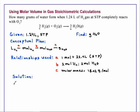Starting with our 1.24 liters of hydrogen gas, we know that 1 mole of hydrogen, under STP conditions, occupies 22.4 liters of hydrogen.